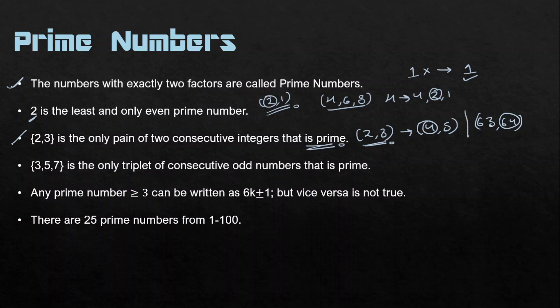3, 5, and 7 is the only triplet of consecutive odd numbers that are all prime. If you take any other set of three consecutive odd numbers beyond 7, one of them will not be prime.